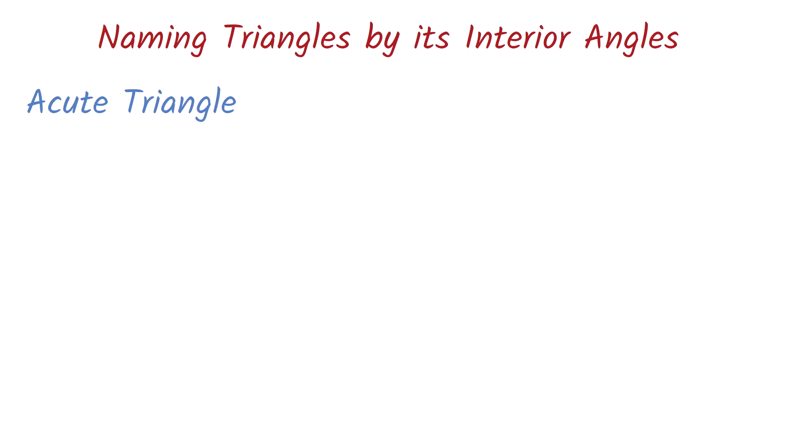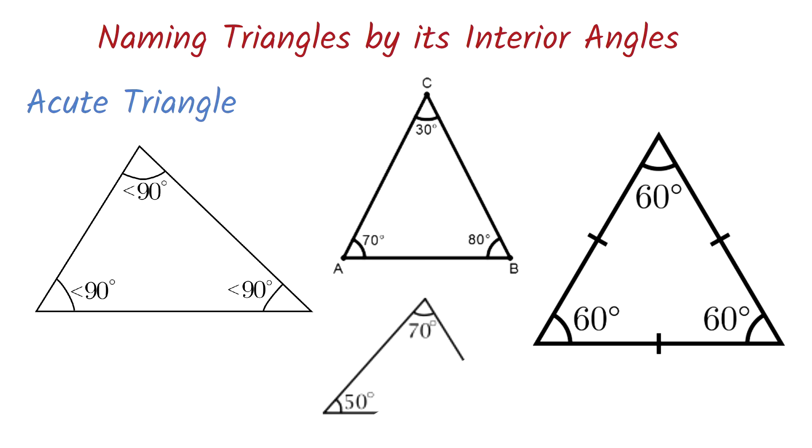Here is the figure. This triangle has all its interior angles being less than 90 degrees. These are examples. None of the angles is more than 90 degrees. Notice that the equilateral triangle we learned about earlier is also an acute triangle because all its angles are less than 90 degrees.